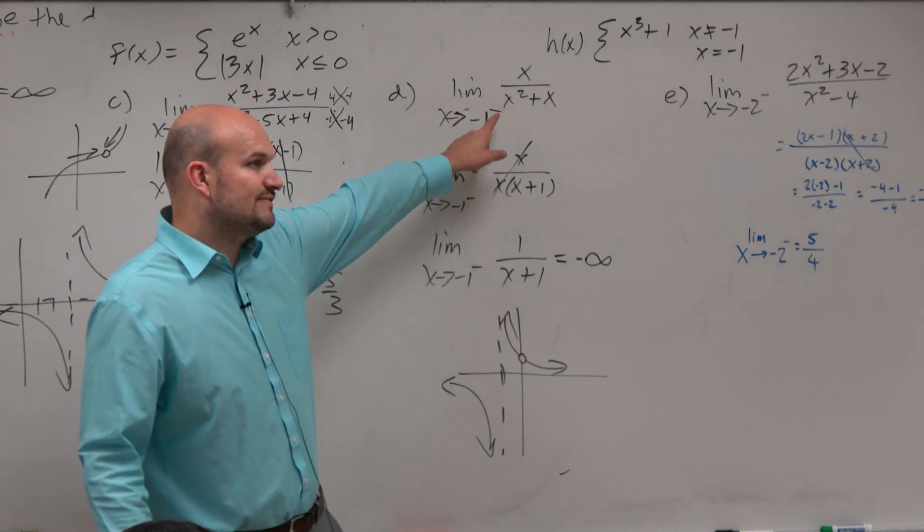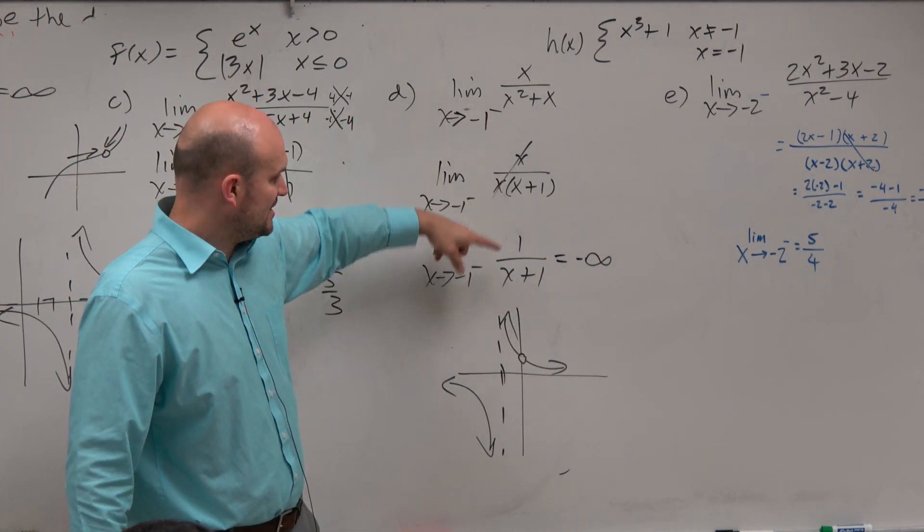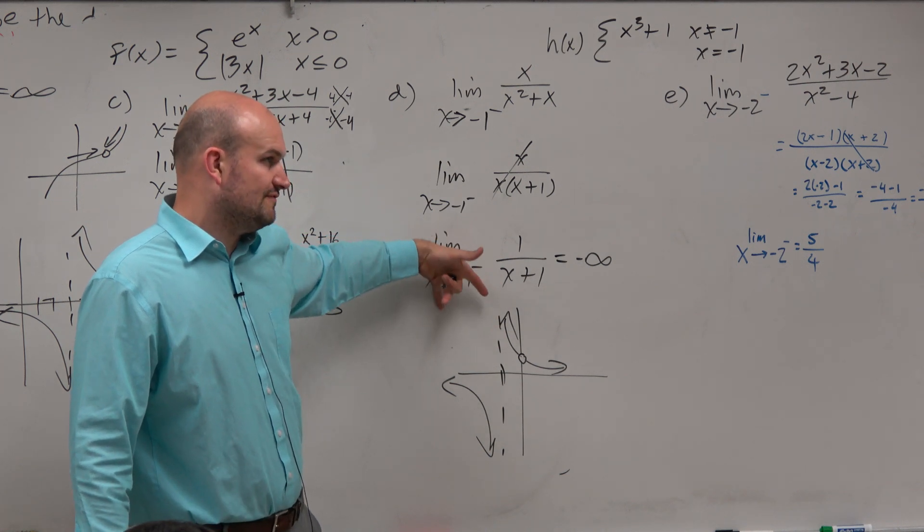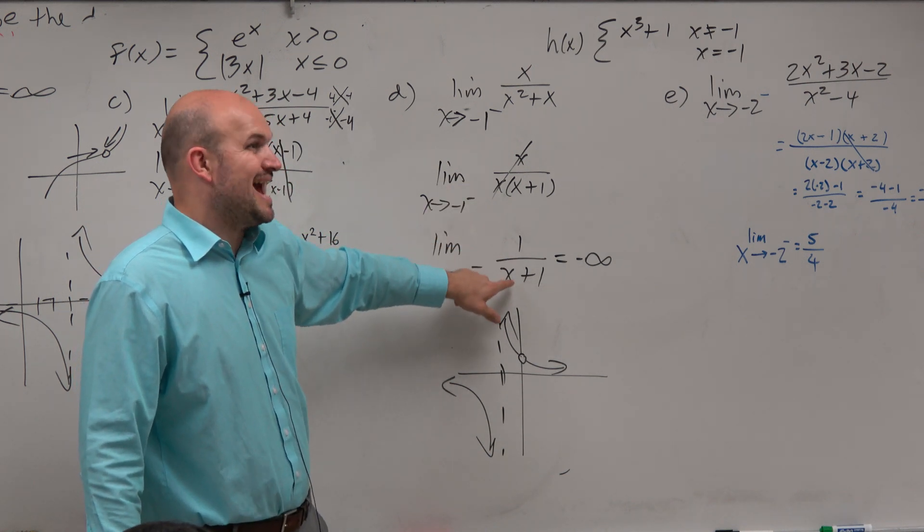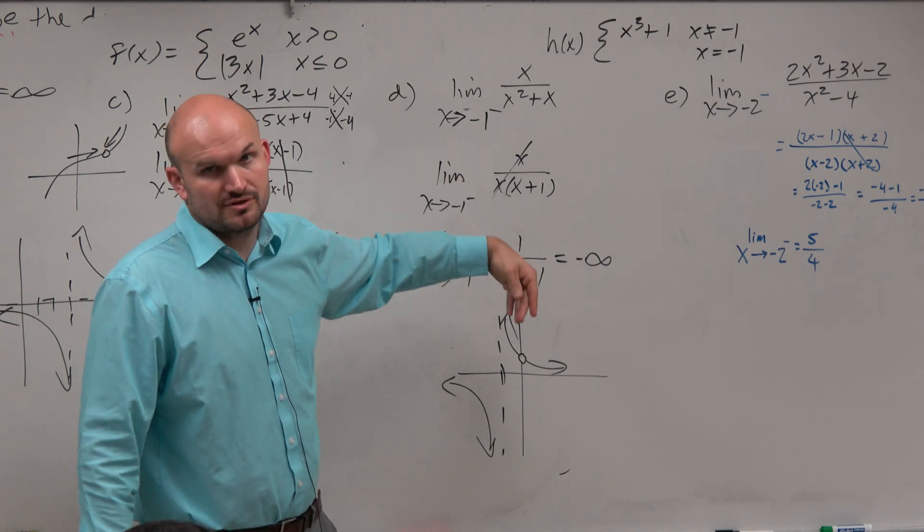OK? Now, again, you could have just graphed this. But if you look at this algebraically, again, you can figure out, yes, even though it's still undefined, but you guys can see that it's approaching an asymptote, right? So therefore, it's going down to infinity.